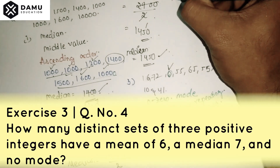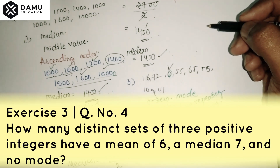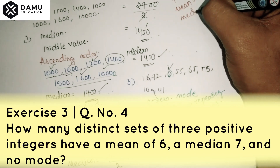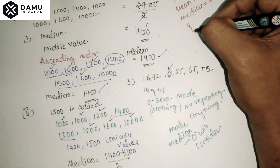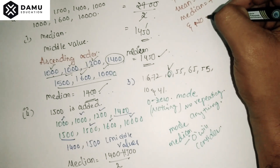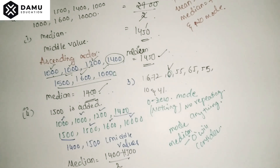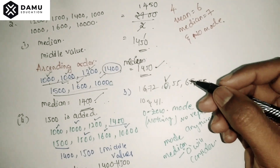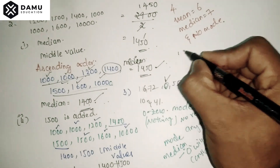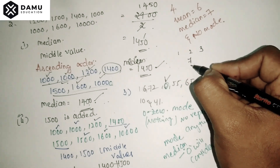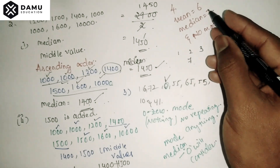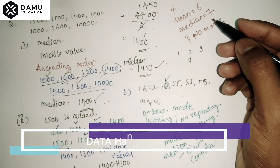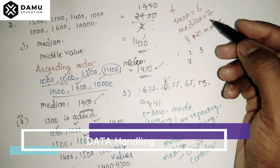The fourth question asks: how many distinct sets of three positive integers have mean equal to 6, median equal to 7, and no mode? Since the median is the middle value of three numbers, the second number is 7. Mean equals 6, so the sum of the three integers is 3 × 6 = 18, with no mode meaning no number can repeat.